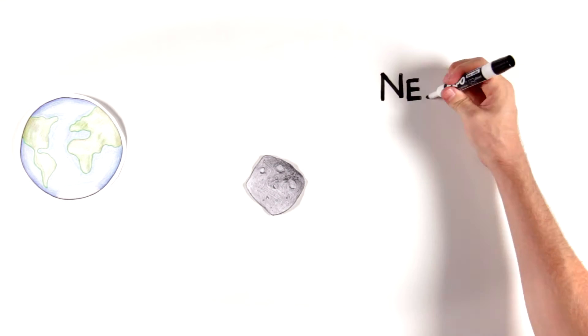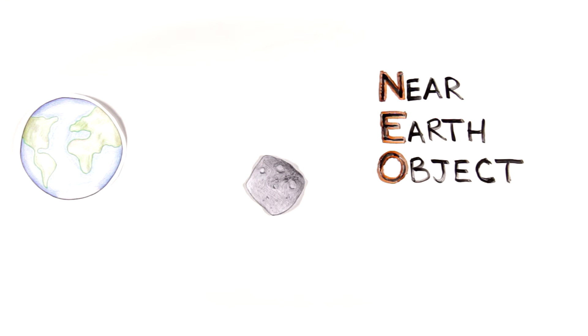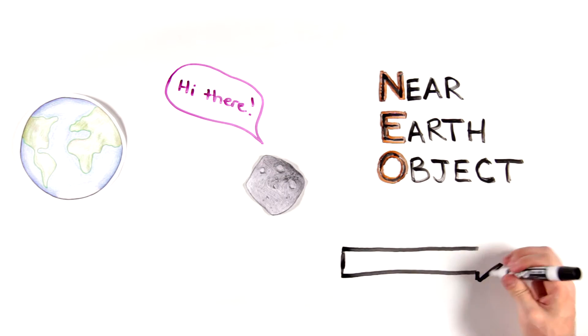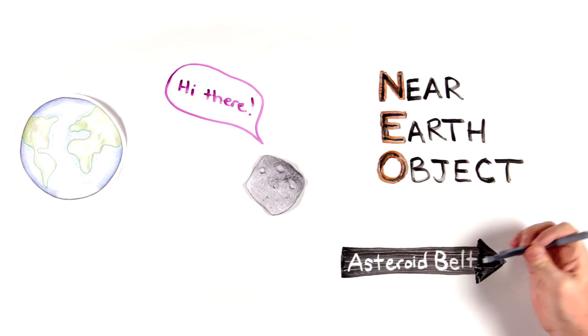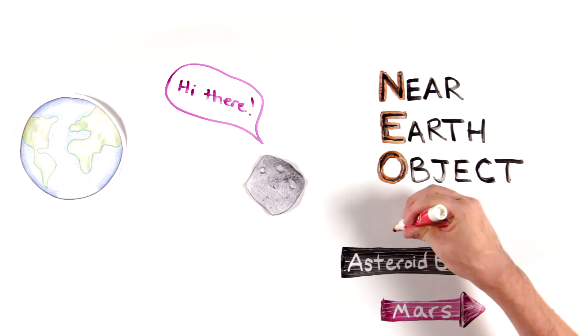Bennu is called a near-Earth object because it has an orbit that brings it close to Earth. Most asteroids aren't very close to the Earth. They live in the asteroid belt between the orbits of Mars and Jupiter.